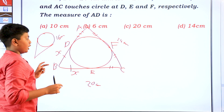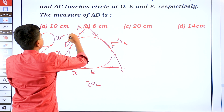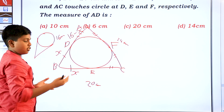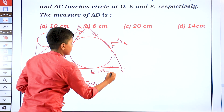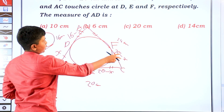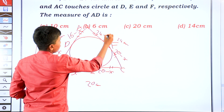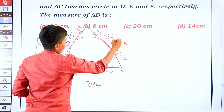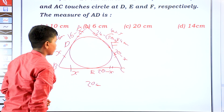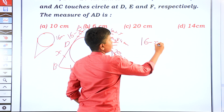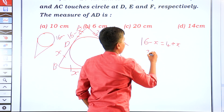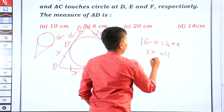Let AD equals x, so DB equals 16 minus x. Since tangent lengths from an external point are equal, BE equals 16 minus x. Also, CE equals 20 minus x, and since CF equals CE, then AF equals 24 minus (20 minus x) which equals 4 plus x. Setting AD equals AF: 16 minus x equals 4 plus x, giving 2x equals 12.